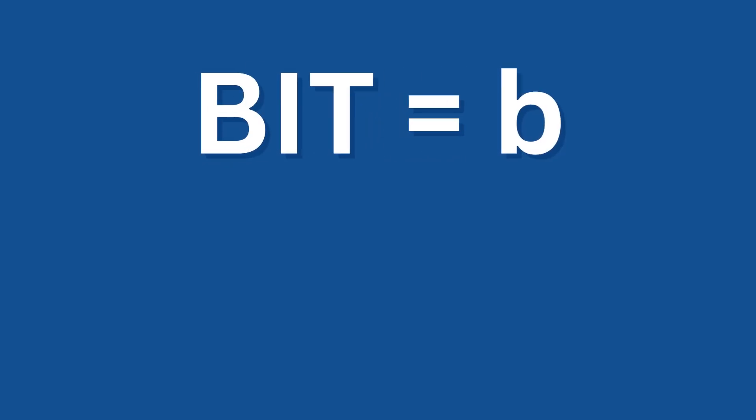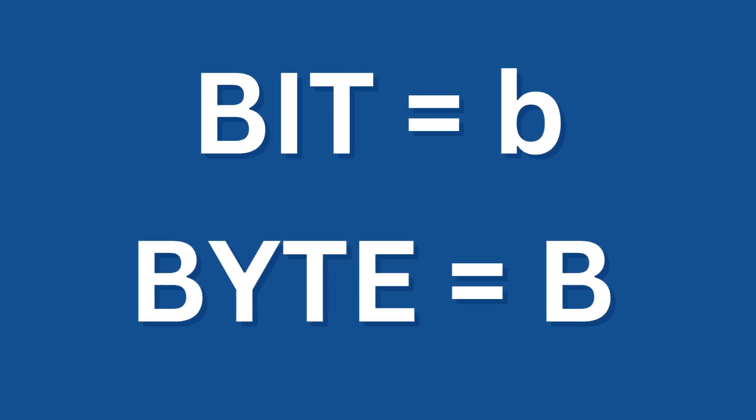A bit is abbreviated with a lowercase b, while a byte is abbreviated with an uppercase B. An easy way to remember this is that bits, little b, are smaller than bytes, big B.